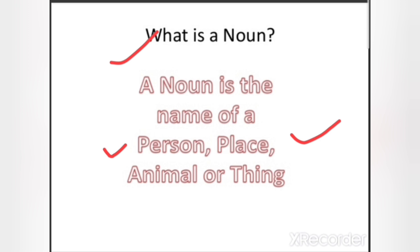Similarly, for place — like 'school' — school is also a noun. And if that school has a specific name, like 'Orange County School,' then that is also a noun. For animals, like 'cat' or 'dog' — dog is also a noun. And if that dog has a name, like 'Tommy,' then 'Tommy' is also a noun.